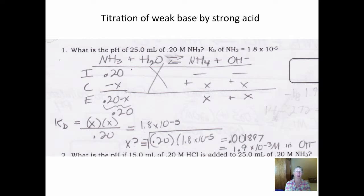The worksheet is entitled titration of a weak base by a strong acid. As you can see, we start with 25 milliliters of 0.2 molar ammonia and the Kb of ammonia, how it acts when it's a base, is 1.8 times 10 to the minus 5.